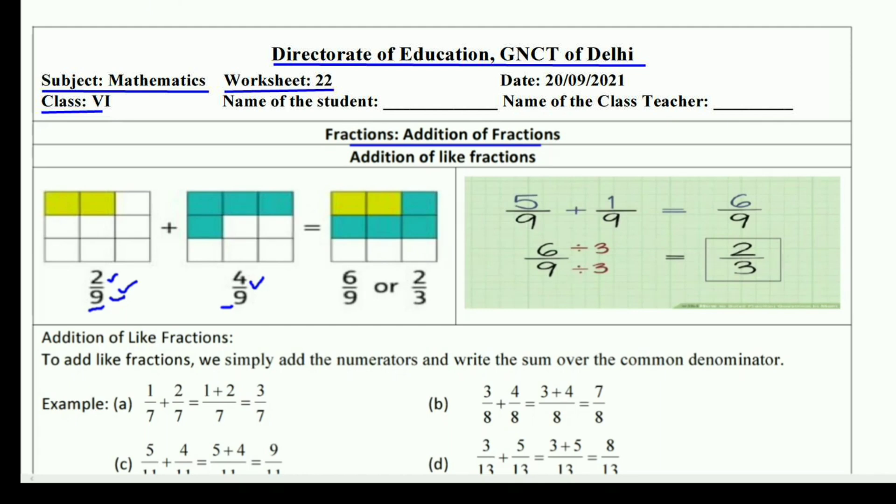There are nine boxes and two are colored, so the fraction is 2/9. In a similar way, there are nine boxes and four boxes are colored, then the fraction is 4/9.